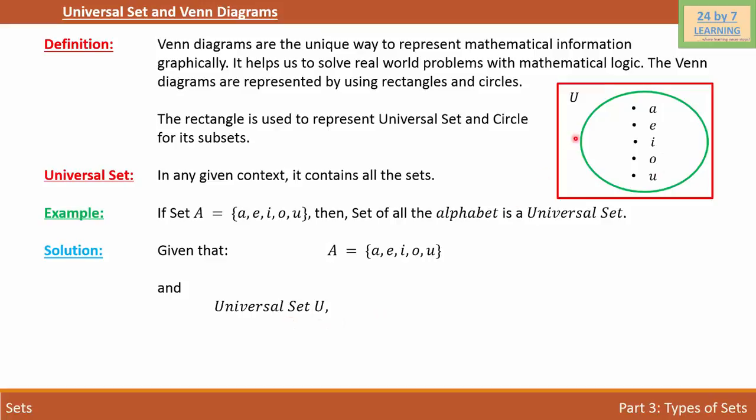And my Universal Set, which is set U, is all the alphabet, which is a, b, c, d, e, all the way to x, y, and z.